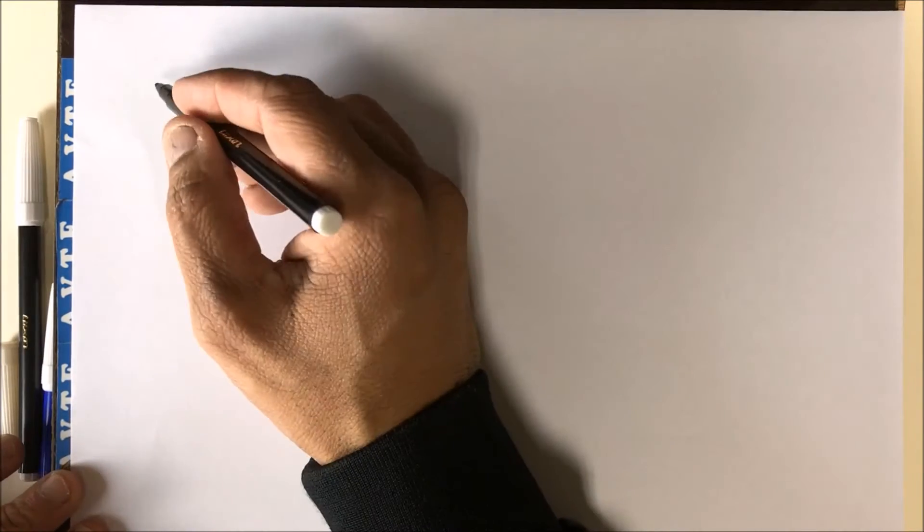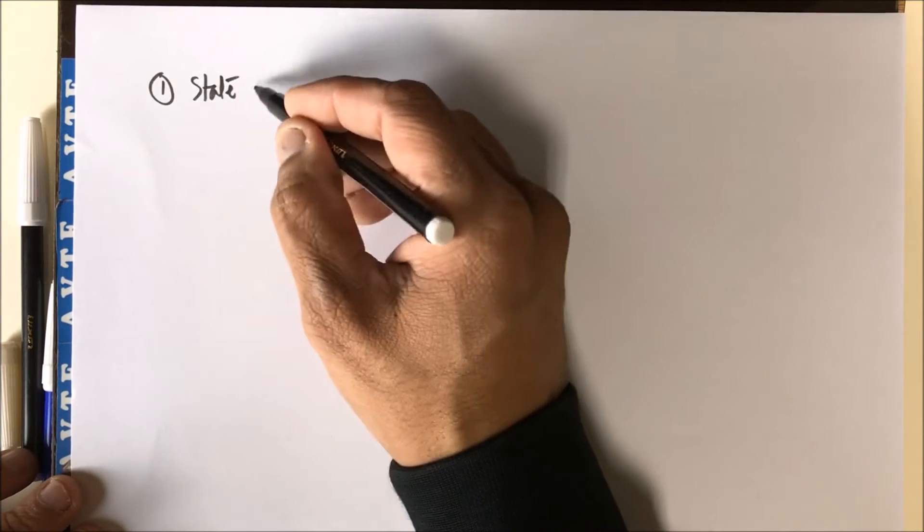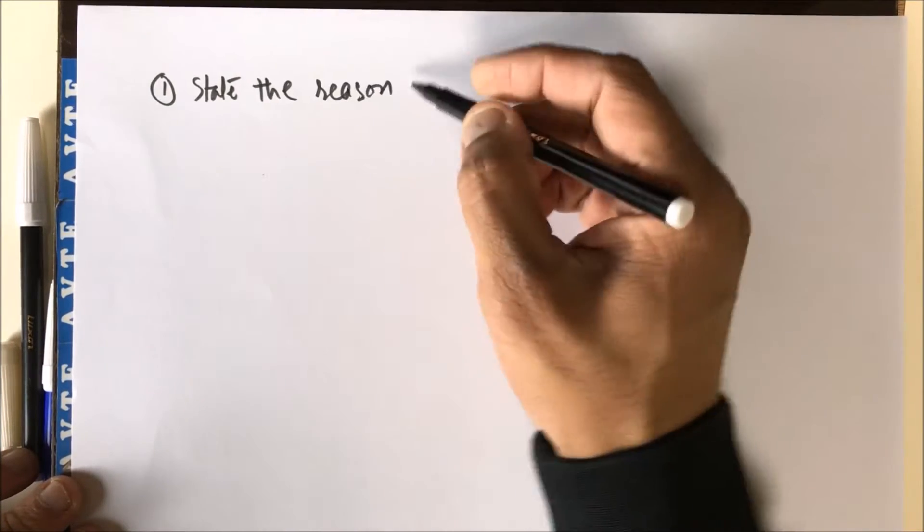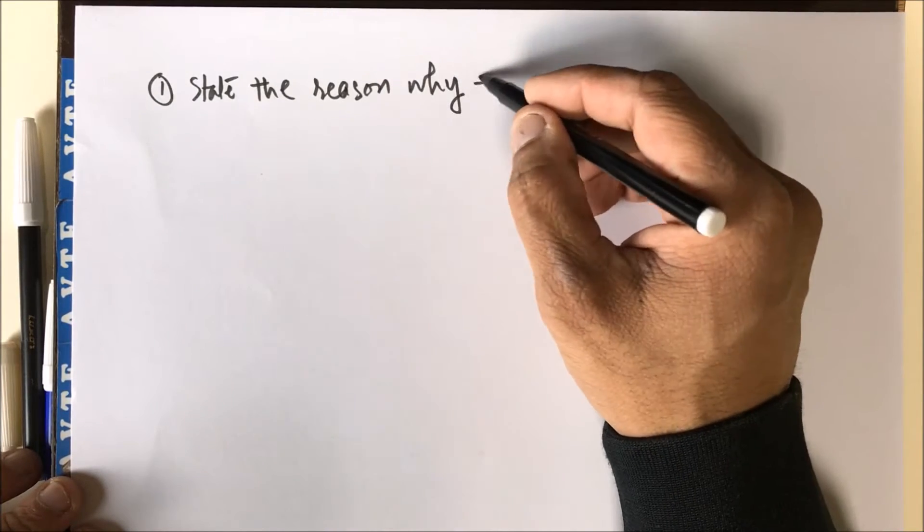Hello students, we are going to solve the CBSE sample paper. Initially, we'll solve one markers. The new pattern says that the one markers are from one to four, and each question carries one mark. I'm taking the first question: State the reason why the relation...